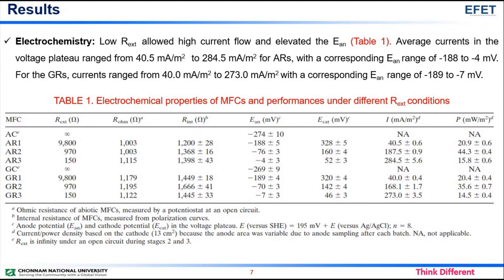Average currents in the voltage plateau range from 40.5 mA/m² to 284.5 mA/m² for acetate-fed reactors, with a corresponding anode potential range of minus 188 to minus 4 mV. For the glucose-fed reactors, currents range from 40.0 mA/m² to 273.0 mA/m², with a corresponding anode potential range of minus 189 to minus 7 mV.